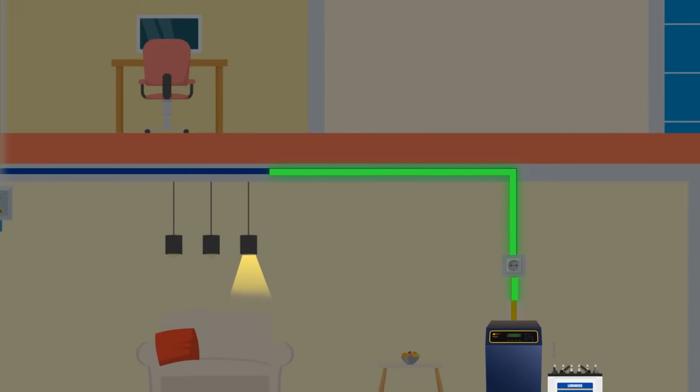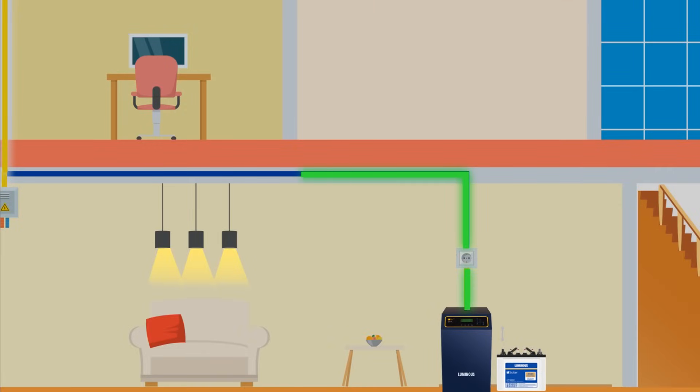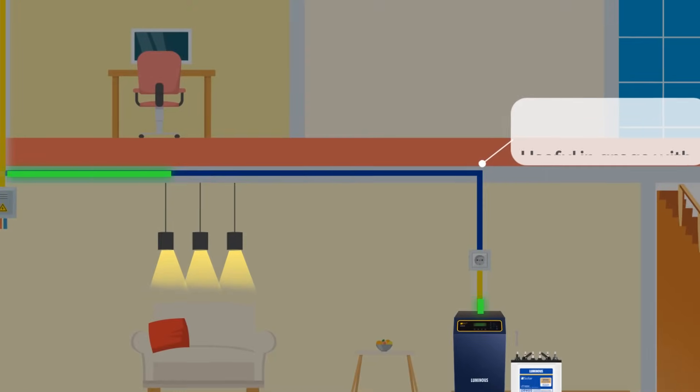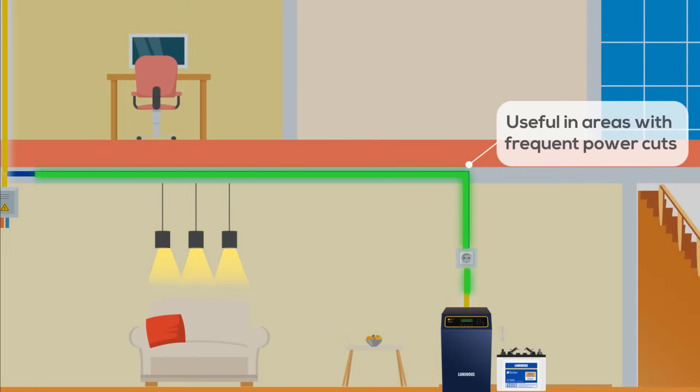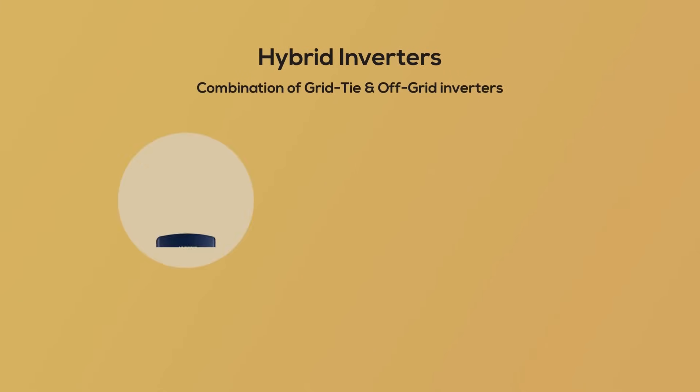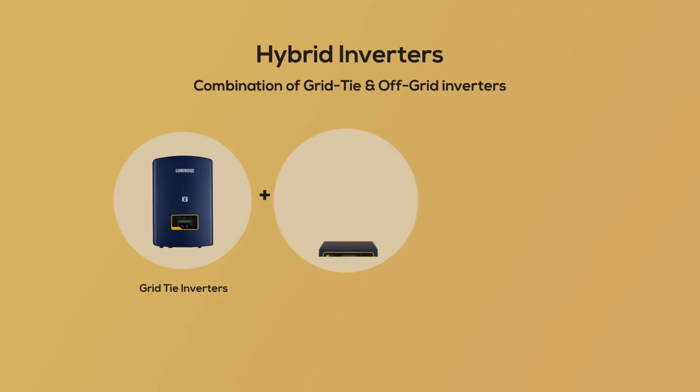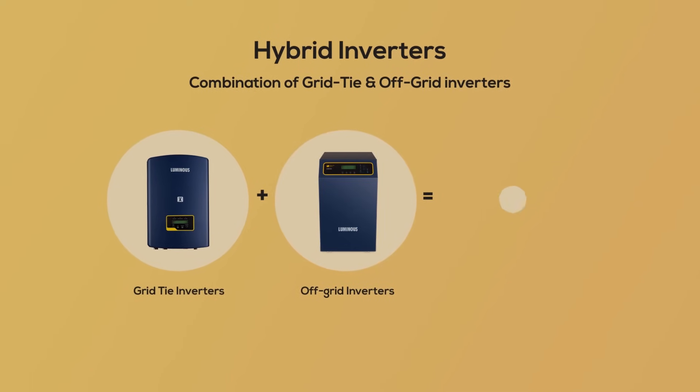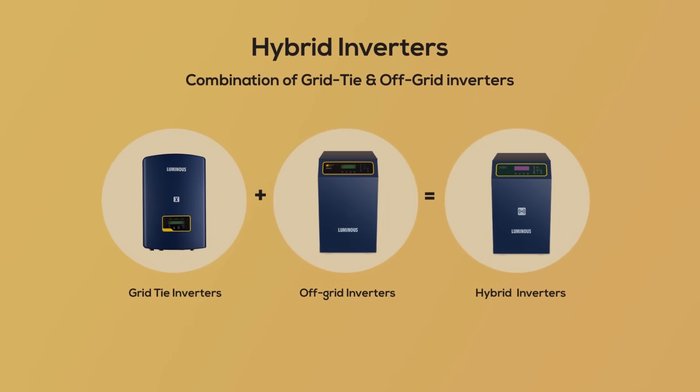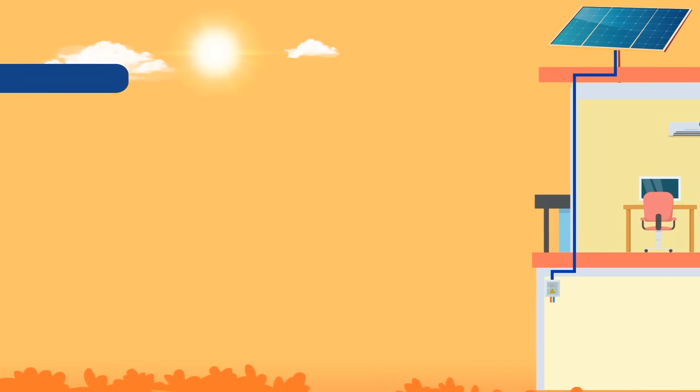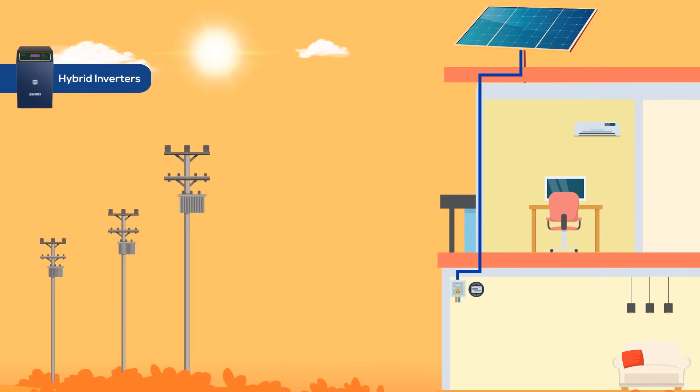This system can be used in areas where there are frequent or long power cuts. Combining the capabilities of both grid-tie and off-grid inverters into one, a hybrid inverter system can be used in both high power-cut areas and areas where there are rare or very few power cuts.